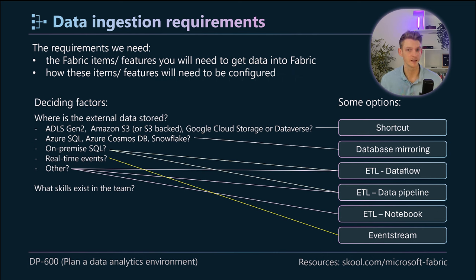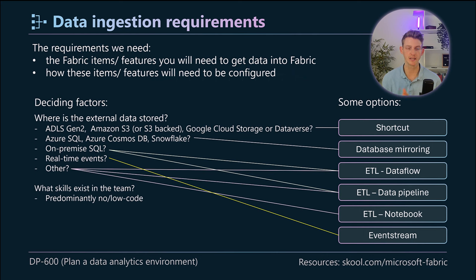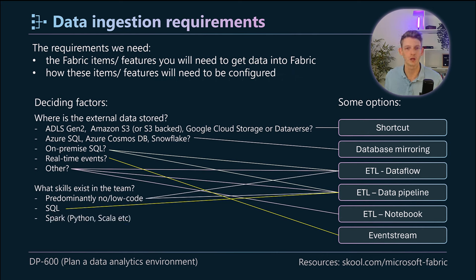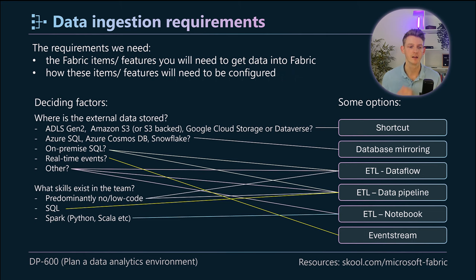Related to that is what skills exist in the team, because you don't want to build a solution that can't be maintained. If you're looking for a predominantly no and low code experience, focus on ETL via data flows and data pipelines. If you've got a lot of SQL experience, you can use the data pipeline with script activities for transformations. If people are familiar with Spark, Python, or Scala, you can use the ETL notebook — for example, if data is coming from a REST API and you want to use Python libraries.